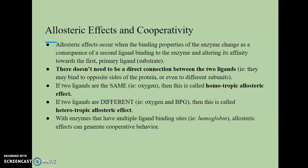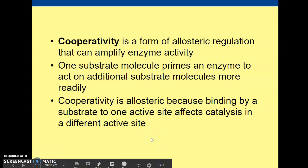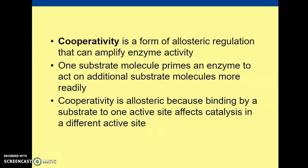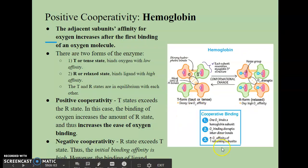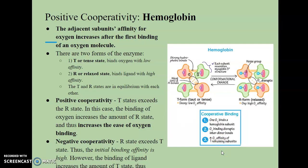With enzymes that have multiple ligand binding sites — for example, hemoglobin, which is a multiple subunit protein — allosteric effects can generate cooperative behavior. Cooperativity is a form of allosteric regulation that can amplify enzyme activity. One substrate molecule, when it first binds, can prime the enzyme to act on additional substrate molecules more readily. It's allosteric because the binding of one substrate to one active site affects the catalysis of different substrates in different active sites. Even though hemoglobin is not an enzyme, it acts as a good example for positive cooperativity.